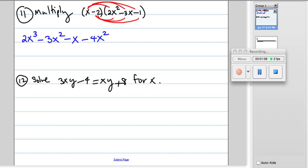Now we're going to combine like terms. There is no other x cubed term other than the first one. We have negative 3x squared and negative 4x squared, that's a total of negative 7x squared.